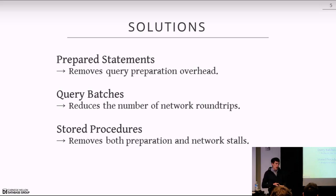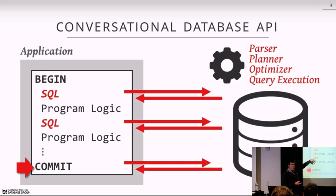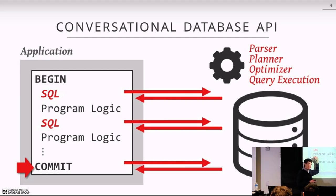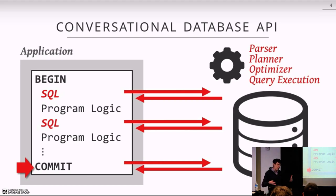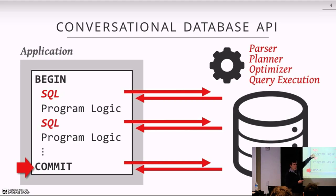Another way to reduce overhead is query batches. Instead of sending queries one at a time, if the input of one SQL statement doesn't rely on the output of another, you can execute them in a batch and have one round trip for both. However, this doesn't always work — if the output of one query is used in an if-branch to determine which query to execute next, you can't batch them.